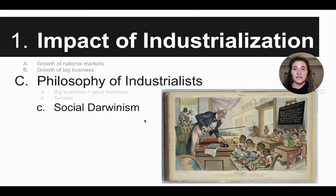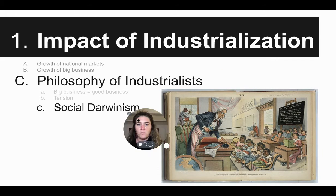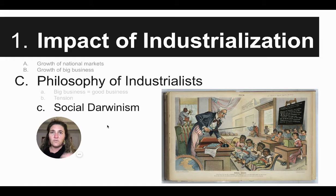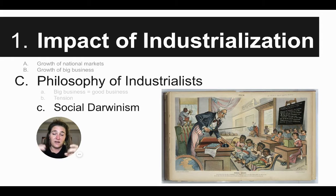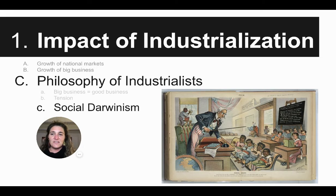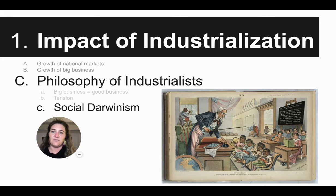Some of the other impacts of industrialization during this time are the ideas that get spread. One of those ideas is what we call social Darwinism. Hopefully you remember Darwinism from biology — this idea of survival of the fittest. In the 1800s, this idea gets placed on people: that those who are wealthy are better and superior, they're more advanced. Social Darwinism is that idea of survival of the fittest but within society. This also plays out to the idea that the government should not help individual people, because if the government helps, that is in fact ensuring survival of the unfit.